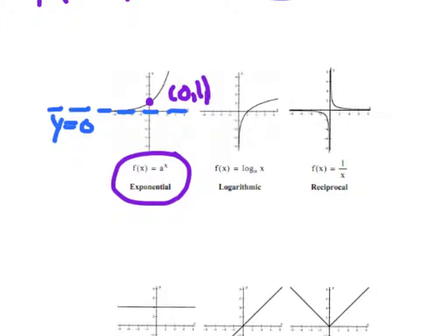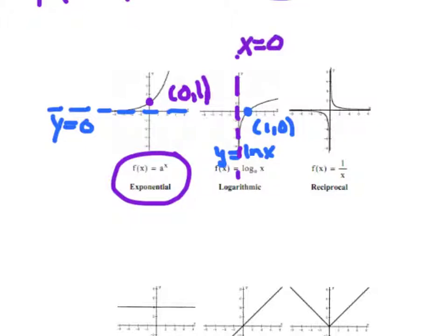Our log graph, y equals log base a of x, or y equals the natural log of x — either of those are going to look very similar. This time you'll notice that it passes through the point one, zero. We cannot take the log of a negative number, so there should be no negative x values. It too has an asymptote — a vertical asymptote — and that should be drawn in every time. The equation of this asymptote is x equals zero. Your exponential and your log are inverses of each other.